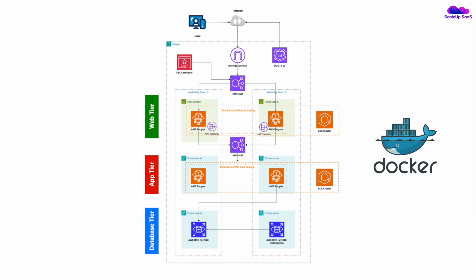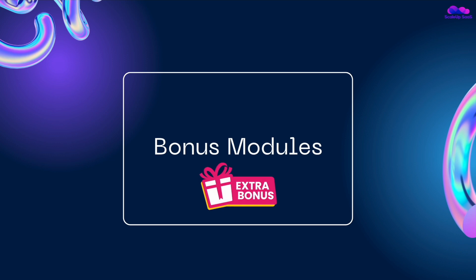In Module 5 we'll learn how to launch and deploy a web application using AWS Container Architecture. You'll learn what Docker is, how to use it, how to create a Docker image, how to push and launch Docker containers in AWS ECS and ECR, and how to build a three-tier web application using AWS container architecture.